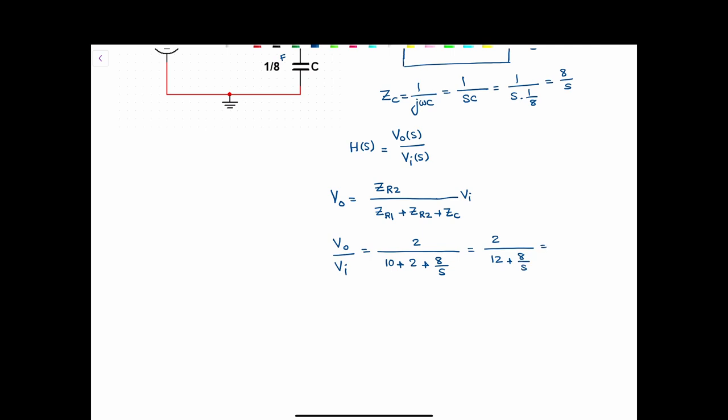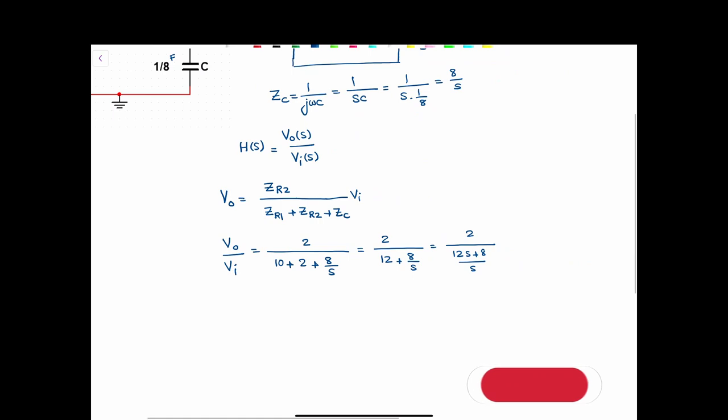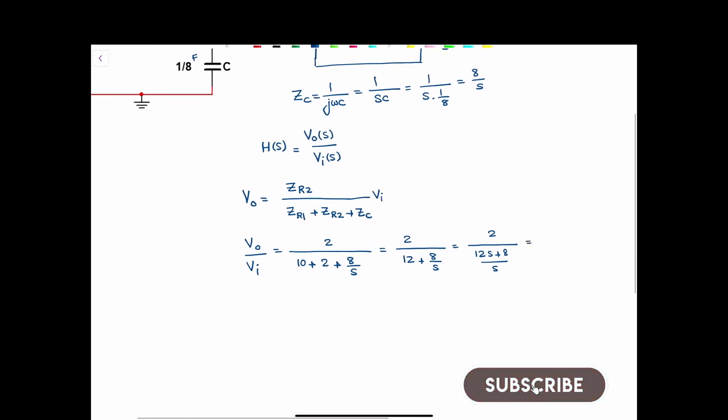If I take the common denominator in the denominator of this fraction, I'm going to have 2 times (12S plus 8) over S, and that will give us 2S over 12S plus 8.